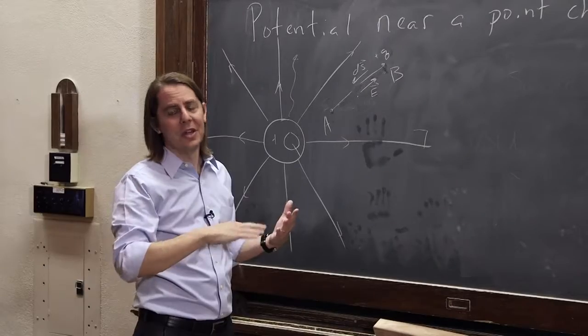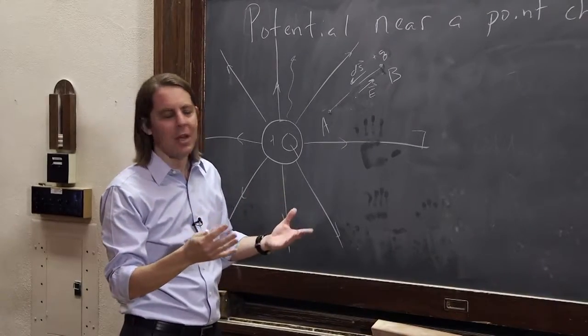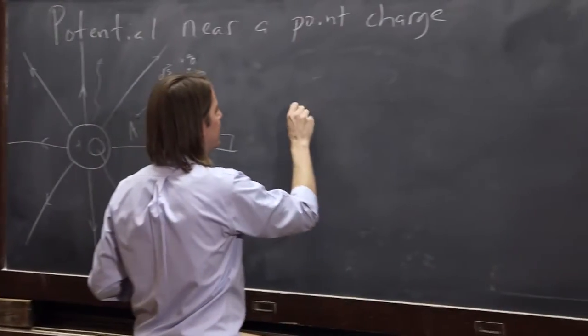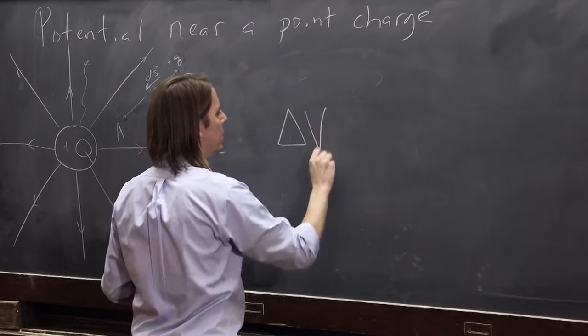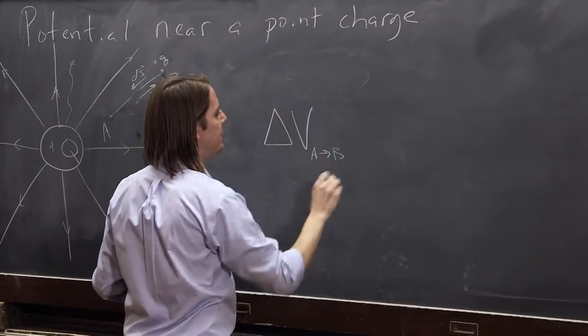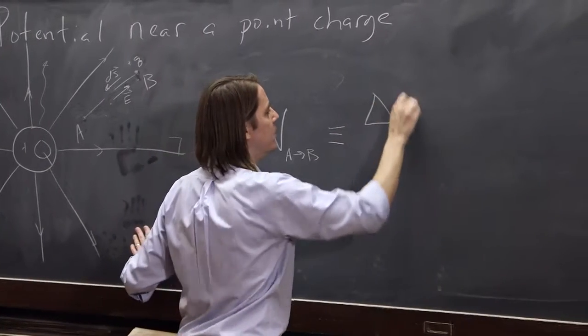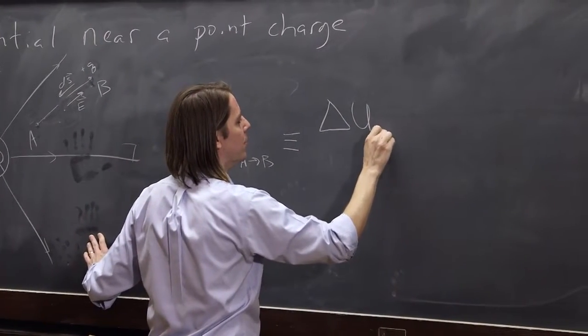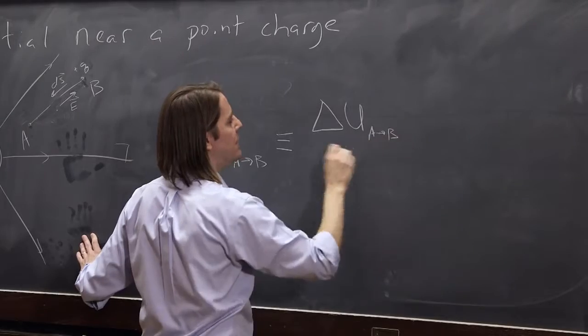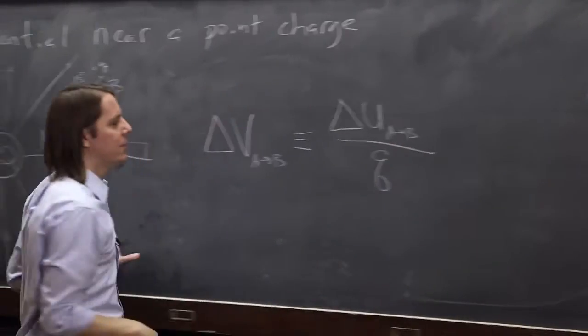And all potential is is just saying, let's do it per unit magnitude of the test charge. So the potential, when you go from A to B, is simply defined as the change in energy when you go from A to B divided by that test charge.